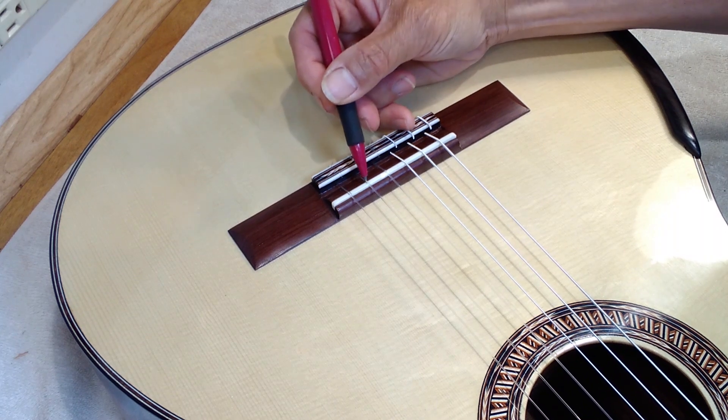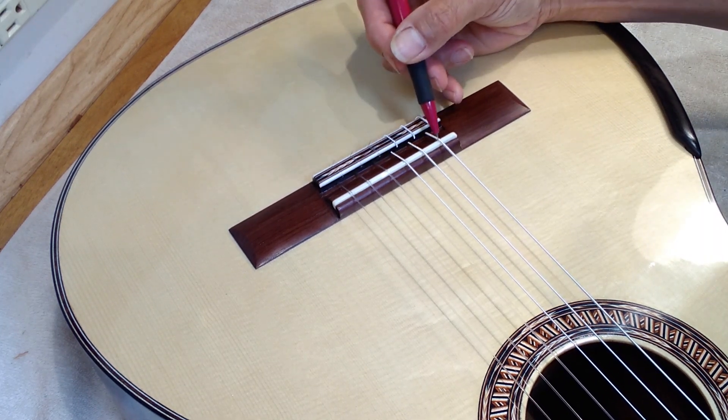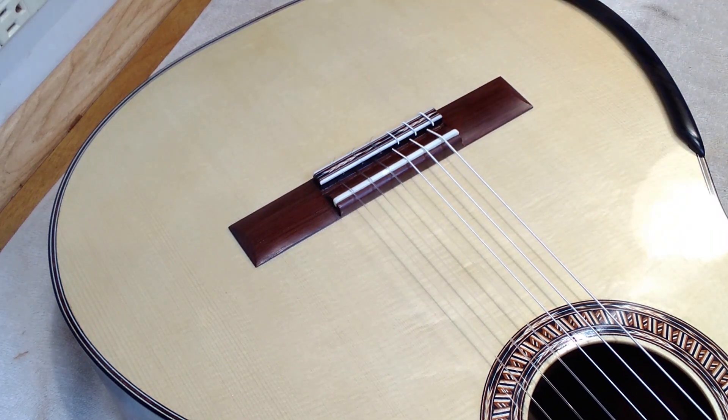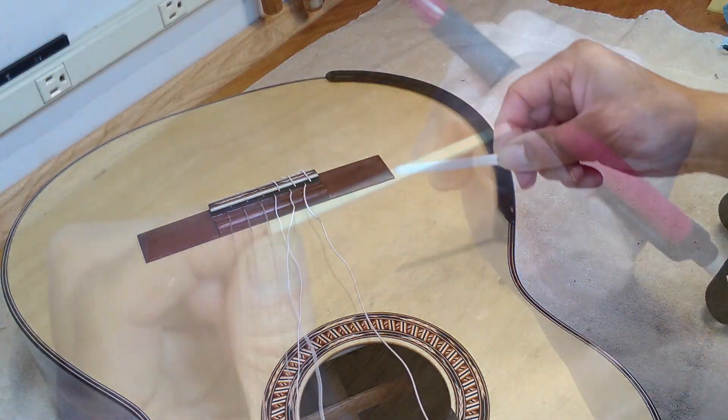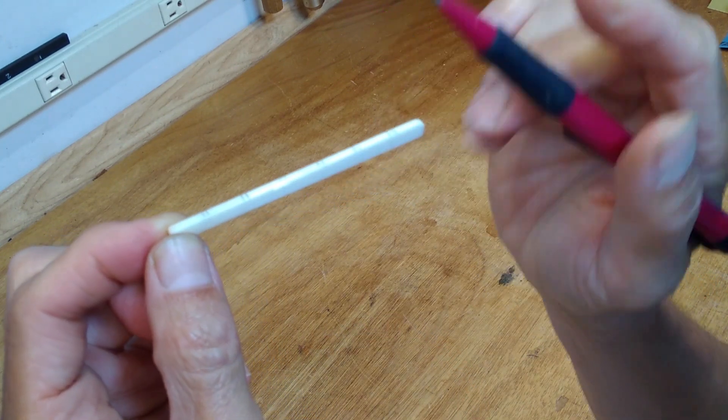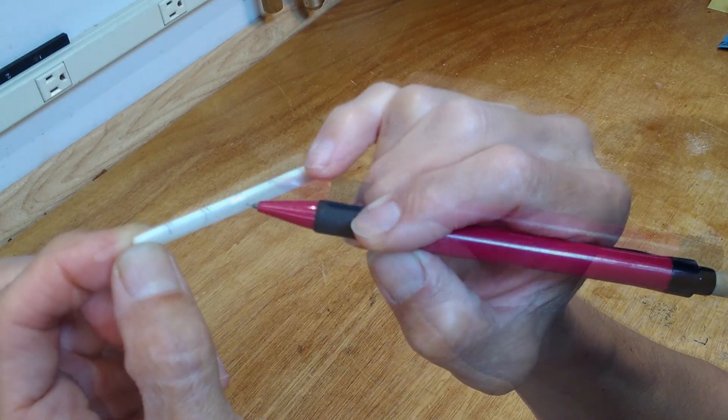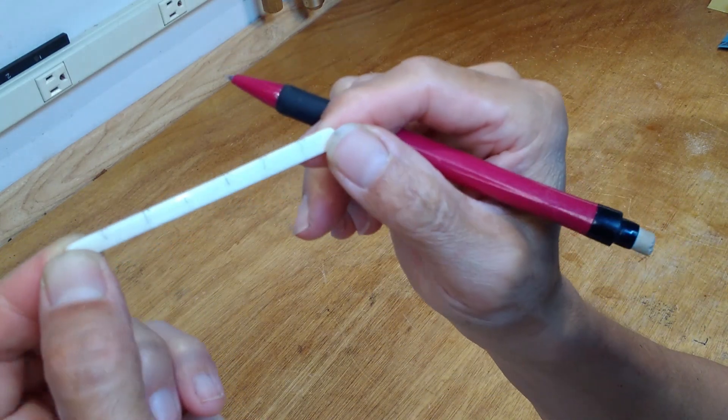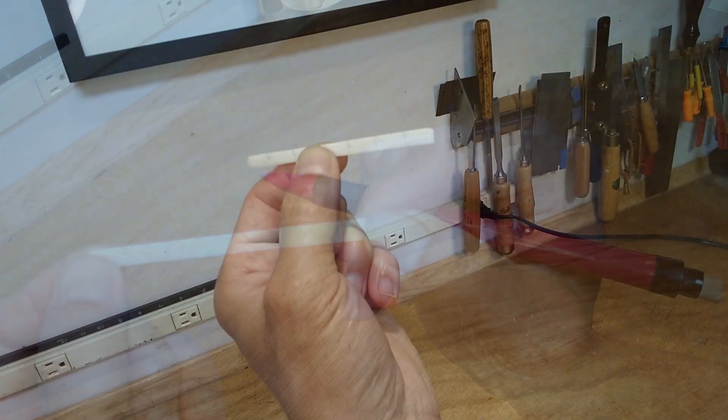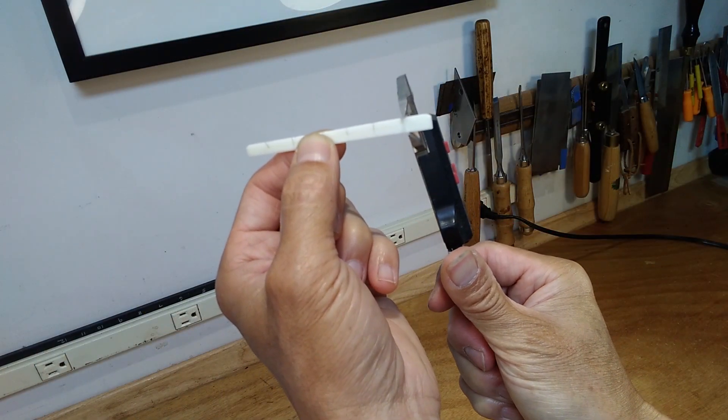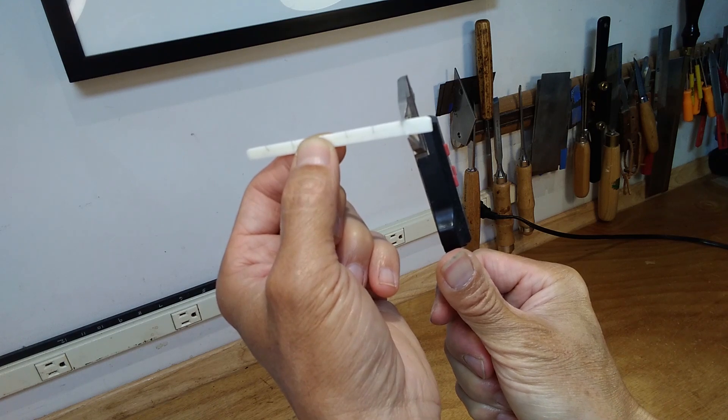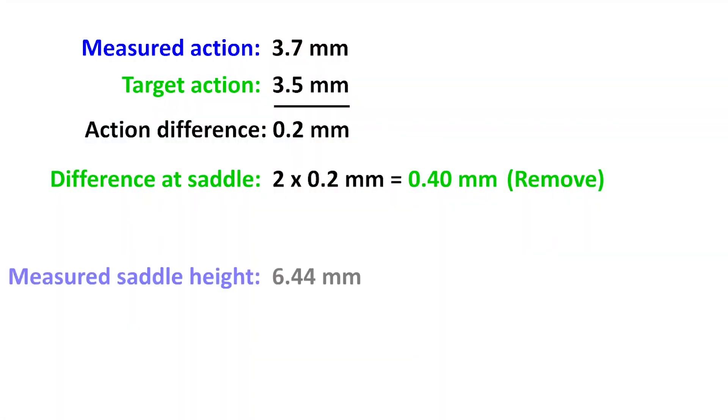Now let me show you how to proceed with the saddle reduction in a very practical and exacting way. Before removing the saddle, the first step is to mark the positions of the strings with a pencil. After you remove the saddle, transpose those marks to the side so you can always see where to measure and remove material. Measure the height of the saddle, making sure the caliper is squarely seated on the bottom of the saddle. Now going back to our notes, the beginning saddle height we just measured was 6.44 millimeters, and we know that we must remove 0.40 millimeters from that saddle height, making the new target saddle height 6.04 millimeters.